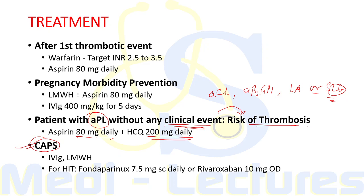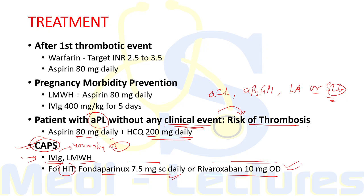Catastrophic APS can be treated with IVIG 400 mg per kg body weight for 5 days and low molecular weight heparin. If there is heparin-induced thrombocytopenia, factor Xa inhibitors can be used — fondaparinux 7.5 mg subcutaneously daily, or tablet rivaroxaban 10 mg daily.